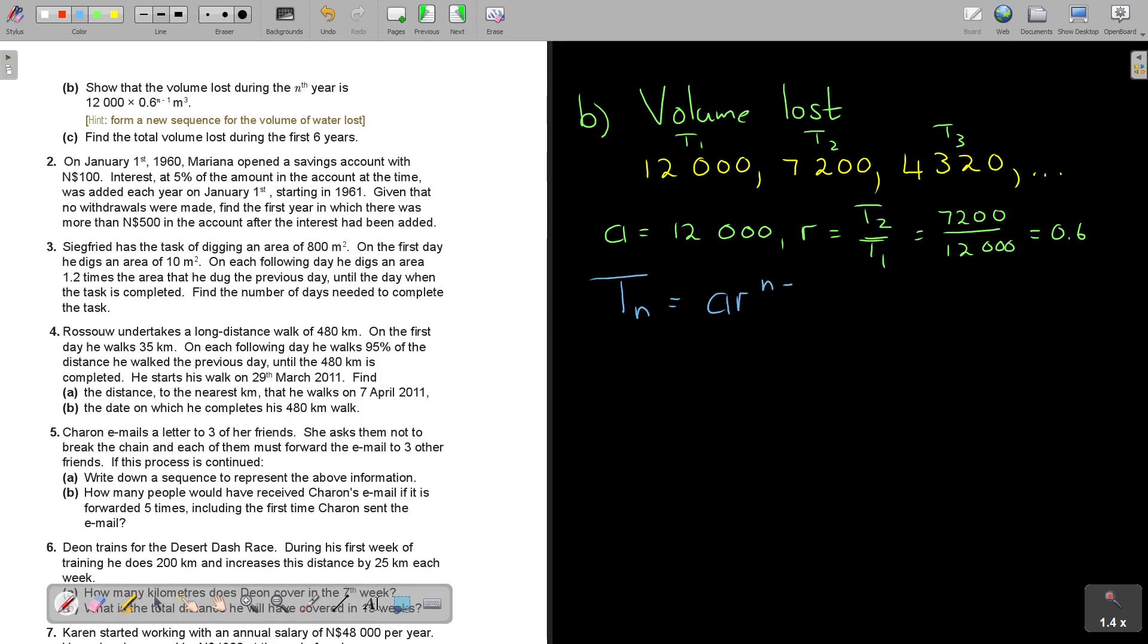So every time I subtract to find that new sequence and this is what I'm having here. So the volume of lost will be, the first it was 12,000, then it was 7,200, then it was 4,320, and then it was going on. So show that the volume lost in the Nth year. I said value of A, but now it's different from the previous, it's 12,000. The value of R is T2 divided T1 or T3 divided T2. So it will be that 7,200 divide 12,000, and if you divide that, this is 0.6. So I can say that TN is still A times R to the power N minus 1. In the place of A it's 12,000, in the place of R it's still 0.6, and in the place, and then I just say N minus 1. I don't know the term.